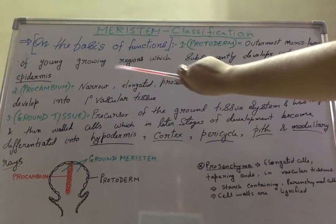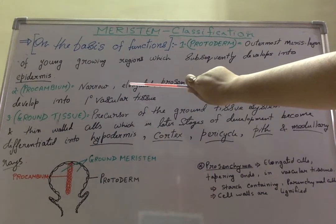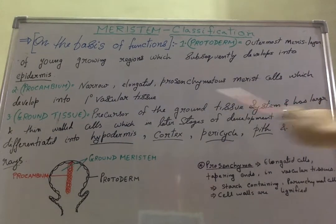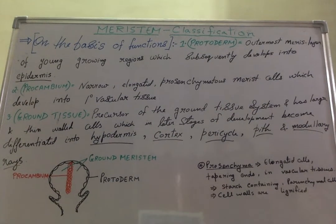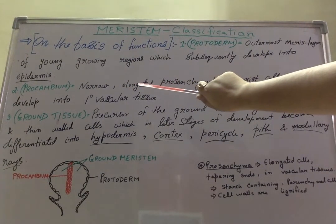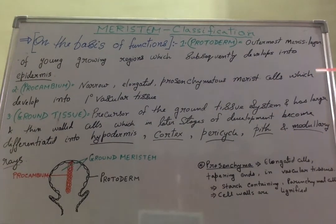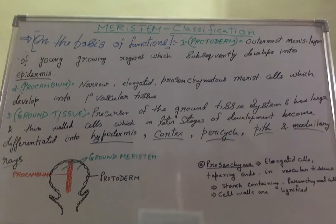The second point is prokambium. Prokambium consists of narrow, elongated, prosenchymatous meristematic cells which develop into primary vascular tissue. Prokambium is composed of those cells which are narrow, elongated, prosenchymatous meristematic cells, which develop into primary vascular tissue — that is, xylem and phloem.